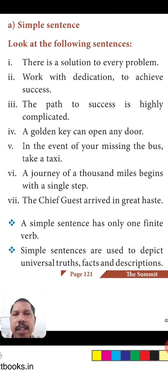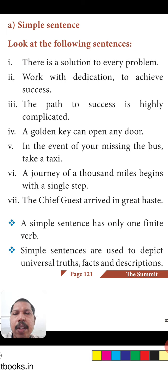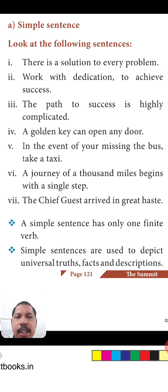First one: simple sentence. Observe the following sentences. There is a solution to every problem. Work with dedication to achieve success. The path to success is highly complicated. A golden key can open any door. In the event of you missing the bus, take a taxi. A journey of a thousand miles begins with a single step. The chief guest arrived in great haste.